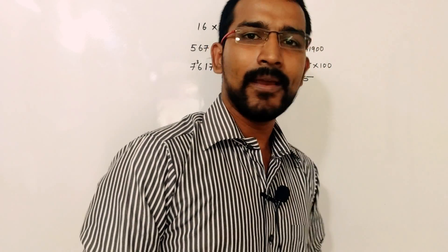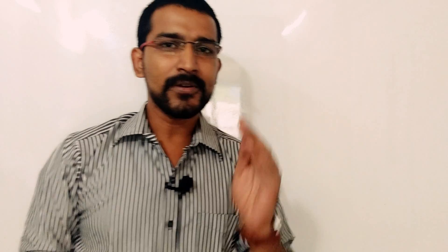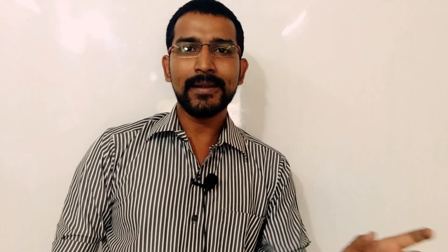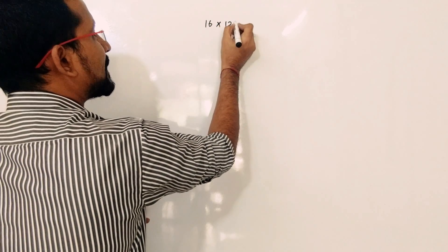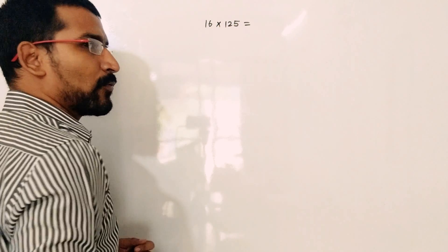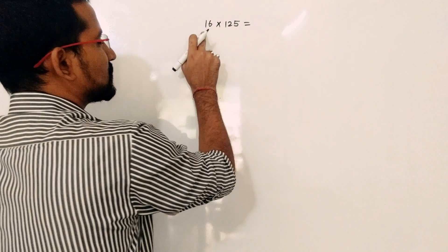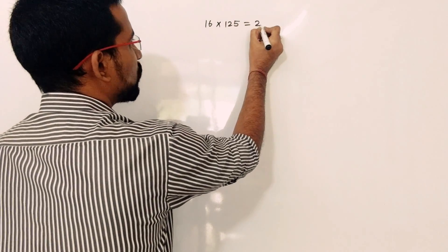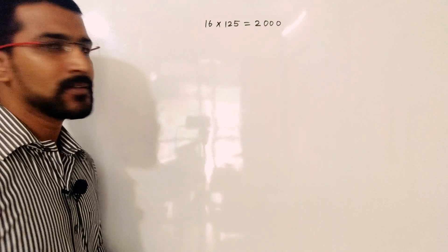Now we'll see how to multiply any number by 125. What you have to do is divide that number by 8 and multiply the result by 1,000. Take the smaller example again: 16 into 125. So 16 divided by 8 is 2, multiply by 1,000, so the answer is 2,000.